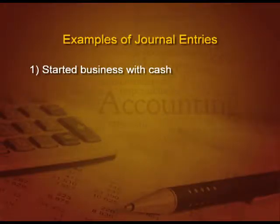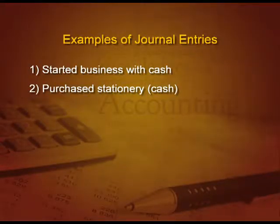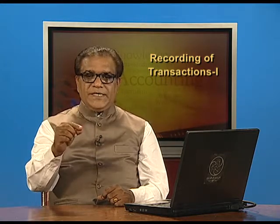Started business with cash — what is coming in? Cash. So asset is debit, and who is contributing capital? Capital increases when you contribute money. So the entry will be: cash account debit to capital account. Next: purchased stationary in cash. Cash is going out, so it is credit. What you have done is an expense of stationary, and expenses are debit. So in the particulars column: stationary account debit, To cash.